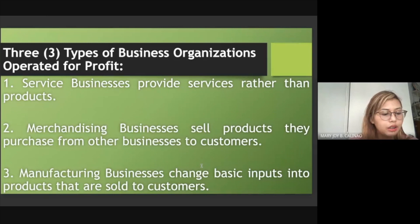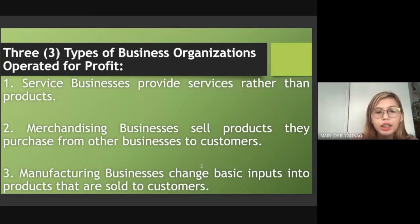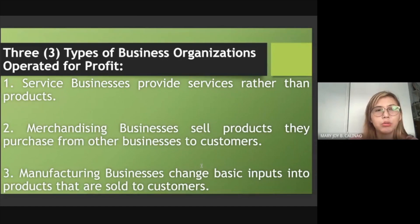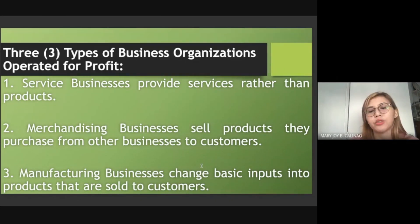Third is manufacturing business, which changes basic inputs — raw materials — into products that are sold to customers. This is a very traditional type of business. Examples include big companies like Nestlé and other businesses that transform raw materials into finished products.